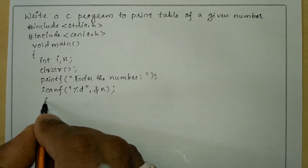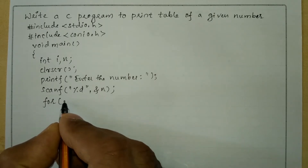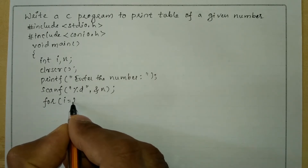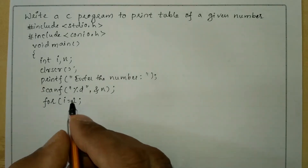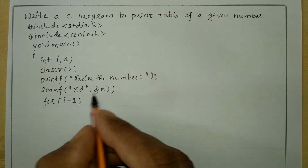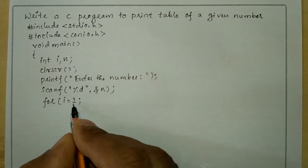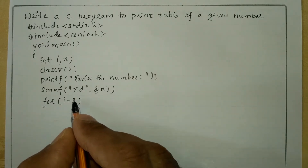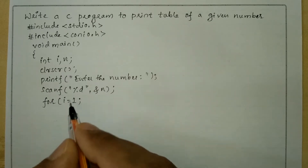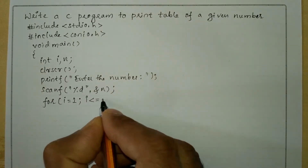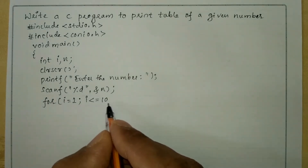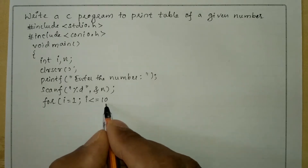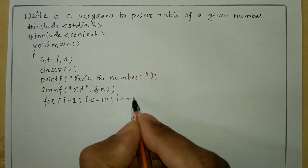Now we are going to use a for loop to iterate through the steps. We set i equal to 1 because we want to start from 1 — for example, if n is 5, then 5 into 1 is 5. The condition is i less than or equal to 10, because we want to print up to 5 into 10 equals 50. Then we put semicolon and i plus plus.